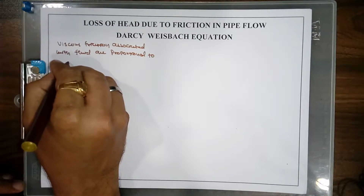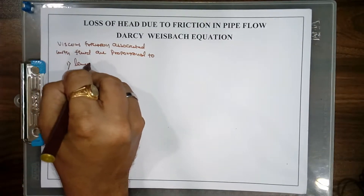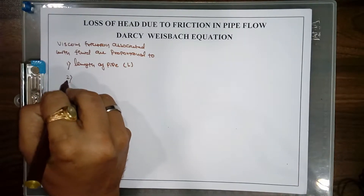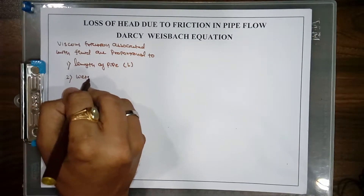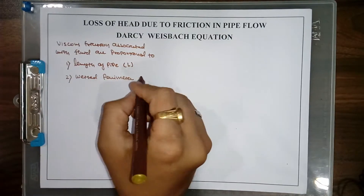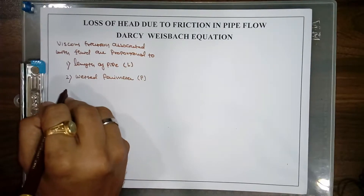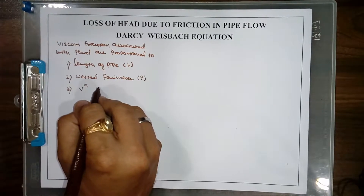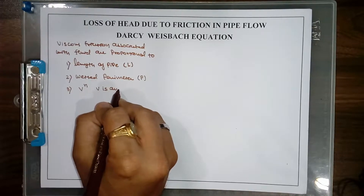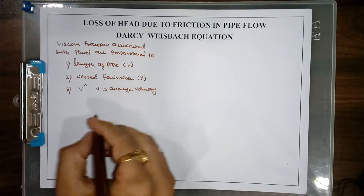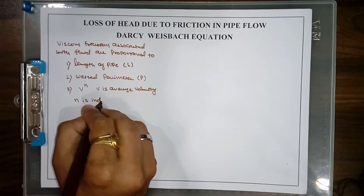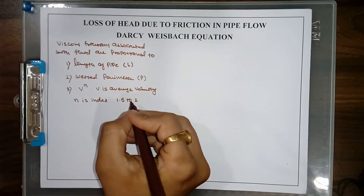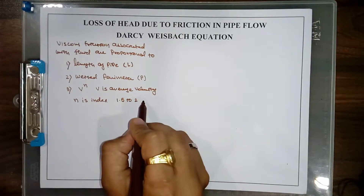First, this viscous friction depends on the length of pipe, which is indicated by L. Second, it depends on the wetted perimeter, indicated by capital P. Then it depends on the velocity to the power n, where V is the average velocity. N is an index which depends on different parameters, and generally the value of this index lies in the range of 1.5 to 2, so generally we take it as 2.